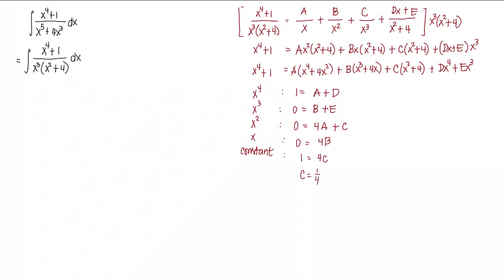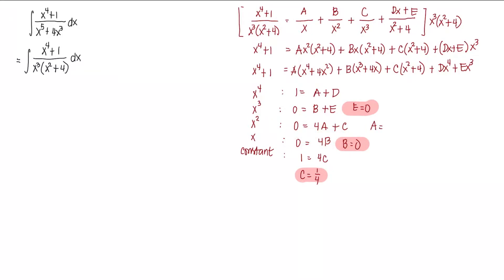From the constant equation, c = 1/4. From 0 = 4b, b = 0. Since b = 0, from b + e = 0, e = 0. From 4a + c = 0, substituting c = 1/4 and transposing gives a = -1/16. Finally, from a + d = 1, transposing a gives d = 1 + 1/16 = 17/16. So we now have all the values.